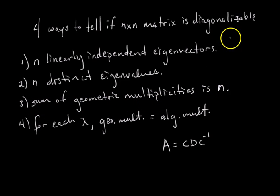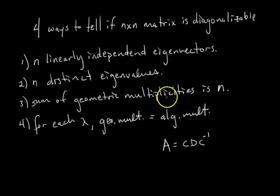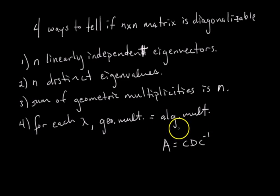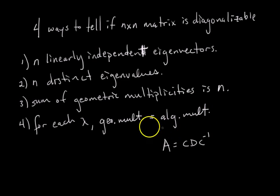Third, if the sum of the geometric multiplicities equals n, you have a diagonalizable matrix — because geometric multiplicity is the dimension of the eigenspace, so n total dimensions of eigenspace means n linearly independent eigenvectors. Fourth, if for each eigenvalue λ the geometric multiplicity equals the algebraic multiplicity, the matrix is diagonalizable. This works because algebraic multiplicities always sum to n, so if they equal the geometric multiplicities, then the geometric multiplicities also sum to n, satisfying condition three.